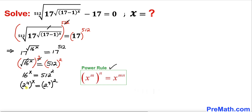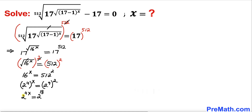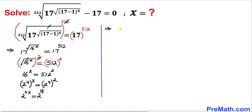Now let's recall the power rule of exponents. According to this rule, the left hand side can be written as 2 power 4x. On the right hand side, 2 power 9 times 2 gives us 18. Now we can see our bases on both sides are the same — 2 — so we can equate our exponents, giving us 4x equals 18.